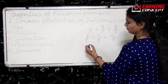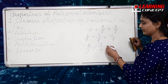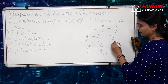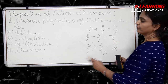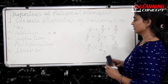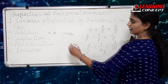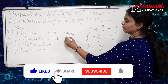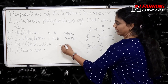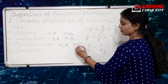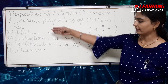If we take two rational numbers like two by seven multiplied by three by four, we get six by twenty-eight, which simplifies to a rational number. So the conclusion is that if A and B are rational numbers, then the sum, difference, and product of these two rational numbers are also rational numbers. Rational numbers are closed under addition, subtraction, and multiplication.